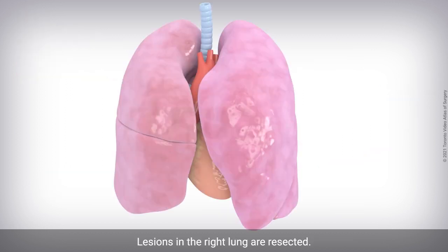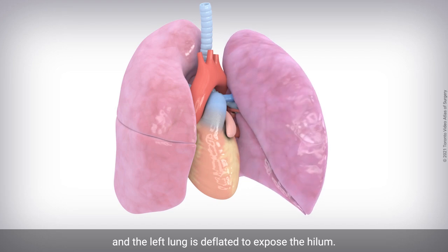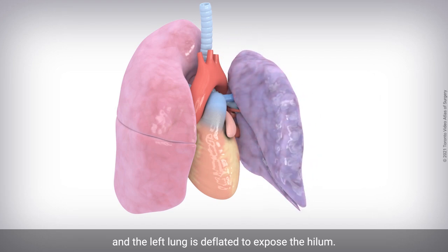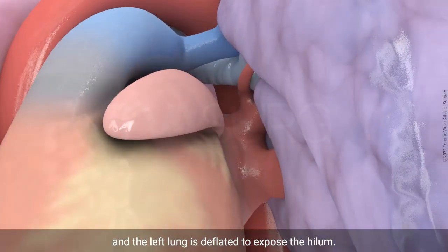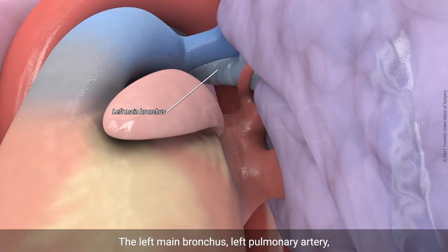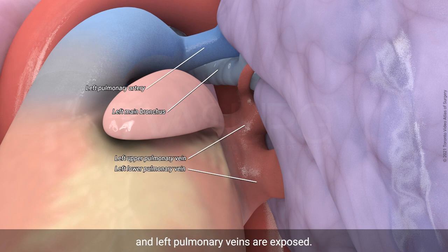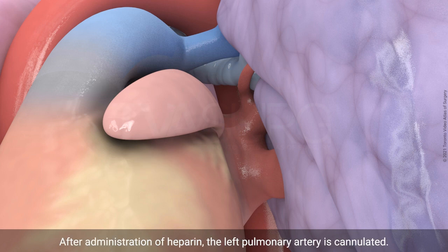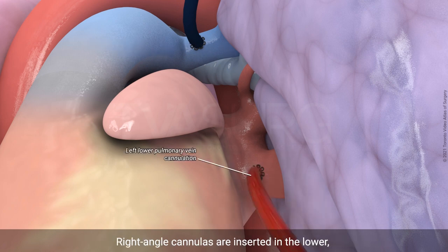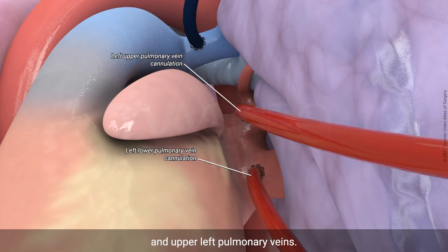Lesions in the right lung are resected, and the left lung is deflated to expose the hilum. The left main bronchus, left pulmonary artery, and left pulmonary veins are exposed. After administration of heparin, the left pulmonary artery is cannulated. Right angle cannulas are inserted in the lower and upper left pulmonary veins.